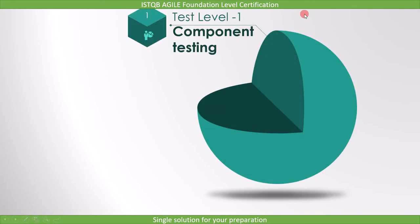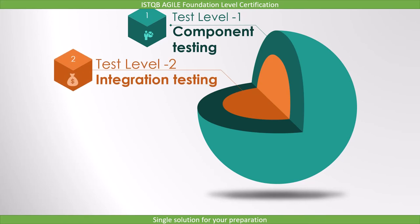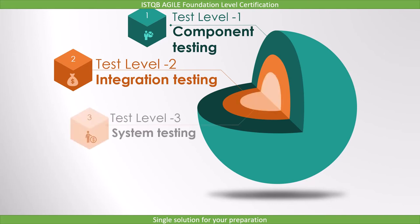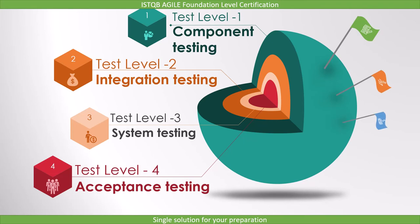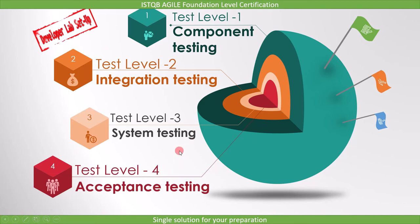The first test level is component testing — as soon as our code is ready, we perform component testing. The next level is integration testing, where you see how two or more components interact with each other. Next is system testing, after which comes acceptance testing. The first two — component and integration testing — are carried out in the developer's lab setup. For system testing and acceptance testing, you require a test environment, which can be real or simulated, suited to the needs of the tests.